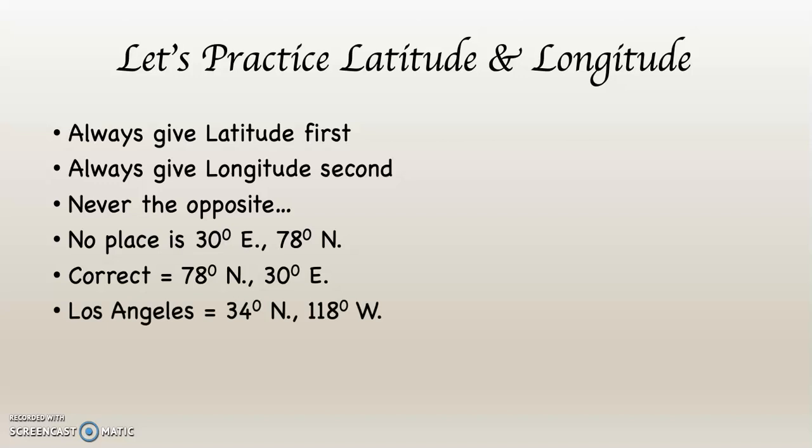In California, the biggest city is Los Angeles. What's the notation for Los Angeles? Los Angeles is 34 degrees north, 118 degrees west. That's Los Angeles — not Shanghai, not New Delhi, not Cairo, not Mexico City. Los Angeles is there. By using this system, you are specifying where a place is, through international agreement.